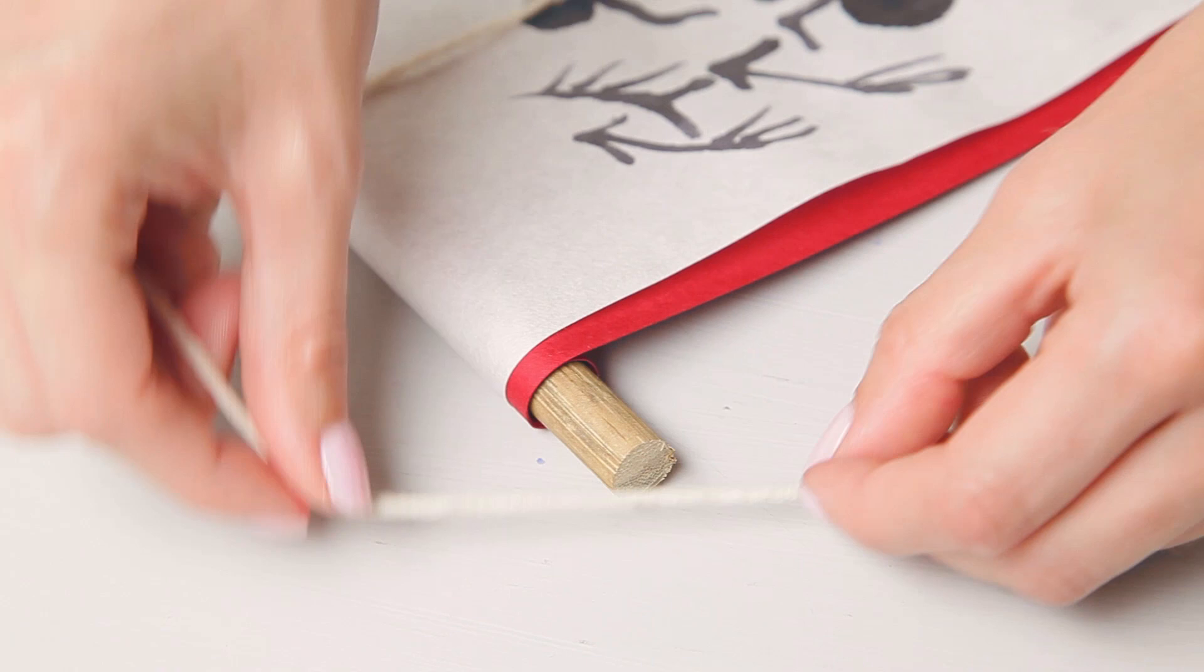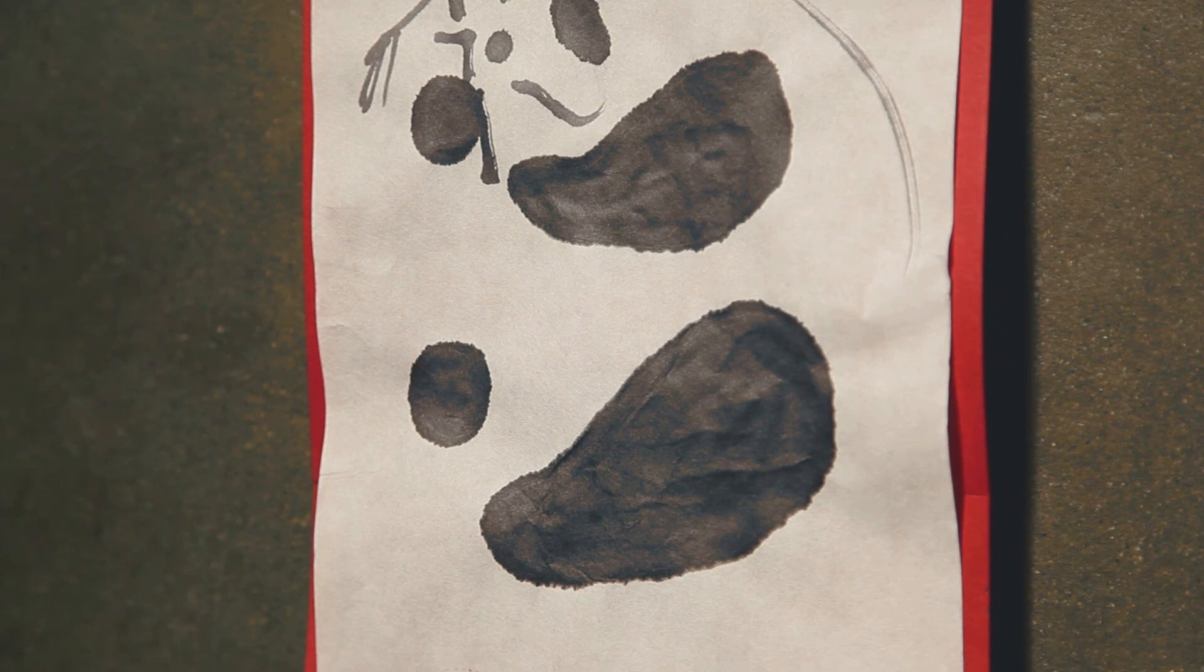The last step is to tie the string on each end of the top dowel. Your painting is now ready to hang.